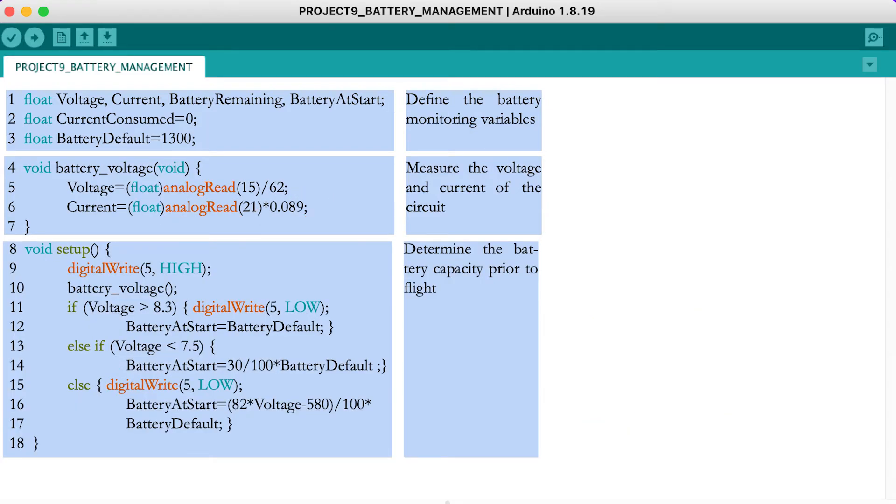In the setup part, you will determine the remaining battery level when the quadcopter motors are not running. Illuminate the red LED and read the battery voltage. If the voltage is greater than 8.3 volts, you consider the battery level to be full and equal to 1300 mAh. In this case, the red LED at pin 5 is turned off.